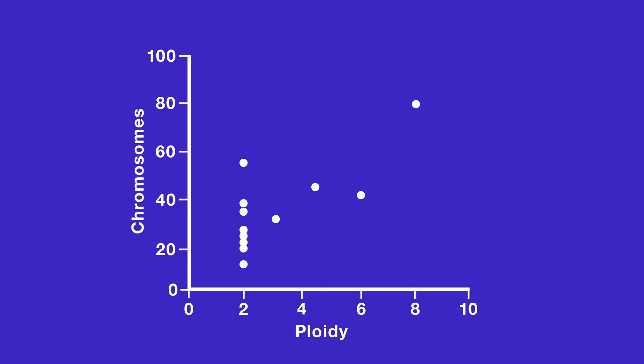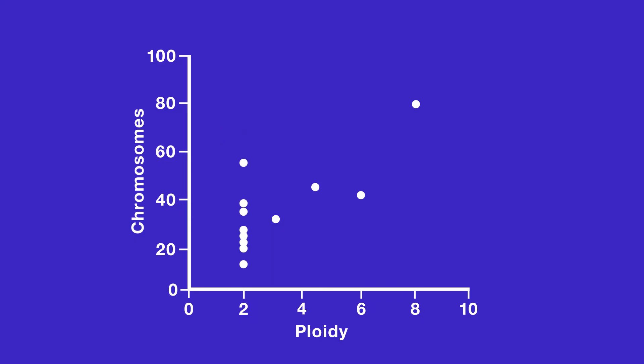So let's try to clean it up. One thing we could do is average the number of chromosomes for each ploidy. If we zoom in on a ploidy of two, we can see that there are eight different data points in that column. We could cut that down by taking an average. This would make the graph look like this. That's cleaner, but we lost something. We can't see the variability — that we had barley with 14 chromosomes, soybean with 40, cotton with 56. Instead, we see a single point at 29.5. Plotting data this way is like summarizing an episode of your favorite TV show to your friends — in the name of simplicity, you lose a lot of detail.